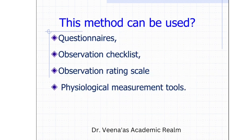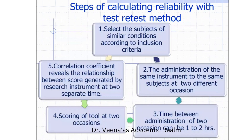This method can be used for assessing reliability through questionnaires, observation checklists, observation rating scales, and physiological measurement tools. Here are the steps for calculating reliability with the test-retest method. Step 1 is to select subjects of similar condition according to inclusion criteria — that is, selection of sample with a similar pattern as per the inclusion criteria.